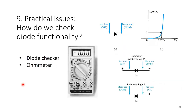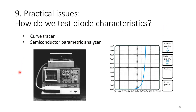To check diode functionality in the lab, you can use a diode checker with an ohmmeter or multimeter. You can also use a curve tracer or a semiconductor parametric analyzer — instruments that allow you to plot the diode IV characteristics and verify that the diode turns on at the intended threshold voltage. Thank you. We will see you in the next video, which covers diode applications.